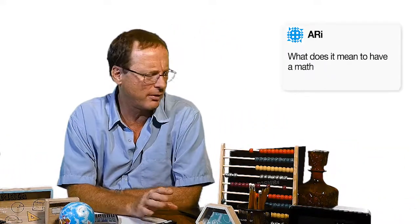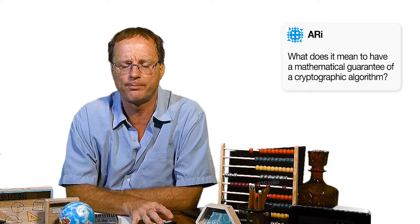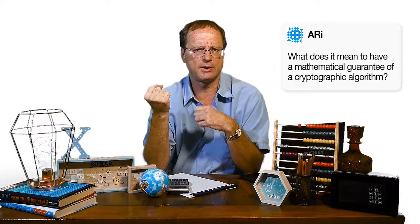So someone says, what does it mean to have a mathematical guarantee of the security of a cryptographic algorithm? Okay, so imagine we've got some encryption algorithm where Alice is sending a message to Bob using some algorithm. Now, we can have different methods of showing that that algorithm is secure.